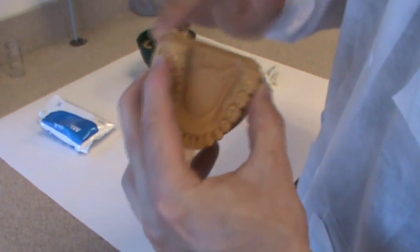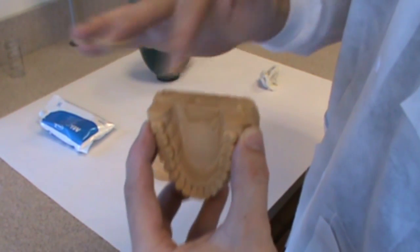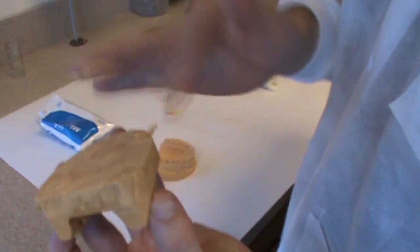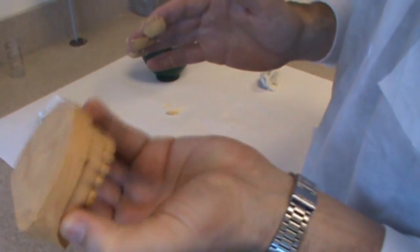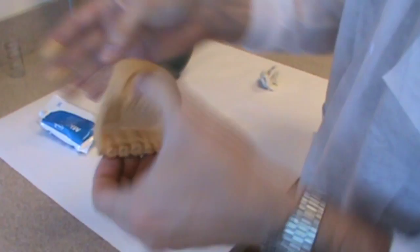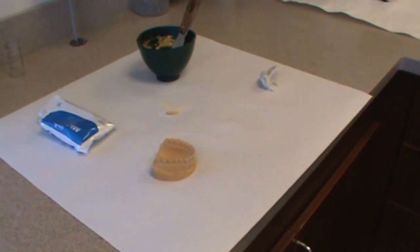Again, you do not want to add this to the section where the teeth or the gingival tissue are located. It will make a mess and it will be very difficult to clean off. You only want to add this to the flat areas that you trimmed at the model trimmer.